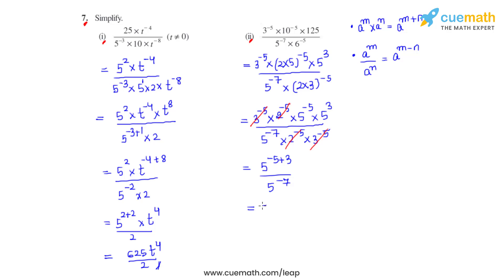We write it as 5 raised to negative 5 plus 3, divided by 5 raised to negative 7, giving us 5 raised to negative 2 divided by 5 raised to negative 7. The bases are the same, so we write it as 5 raised to the subtraction of the powers: minus 2 minus of minus 7, which becomes minus 2 plus 7. That gives us the power of 5 as 5, and this is how we solve this problem.